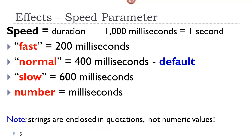Rather than coding in the milliseconds, you can also code in three other values. Fast, which is essentially 200 milliseconds. Normal, which is 400 milliseconds, which is the default. Or slow, which is 600 milliseconds. You can also code in a number. Note that strings are enclosed in quotations, whereas numeric values are not.